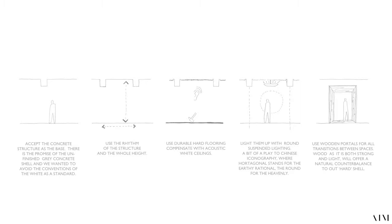The second image shows it has the rhythm of the columns, which is particular in China, and we maximized the height. The third image: we chose hard flooring and therefore made the ceiling acoustically conditioning. The fourth image: we put the lighting up using round elements, and started to play with round versus square — in China, the square stands for the rational and earthly, and the round for the divine and spiritual.